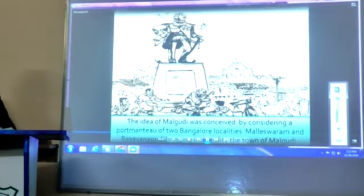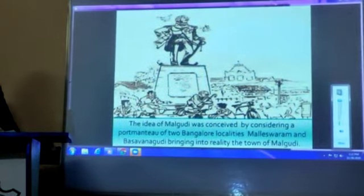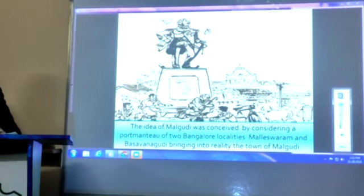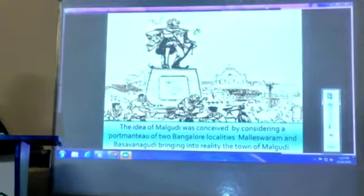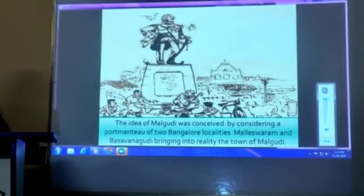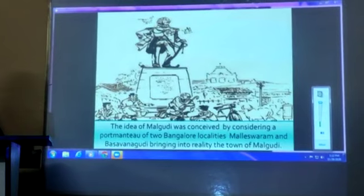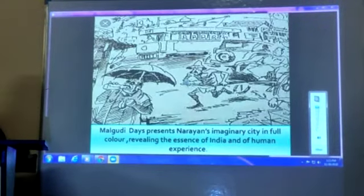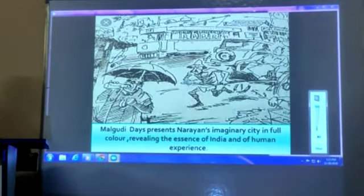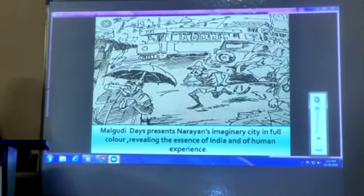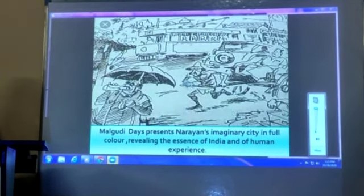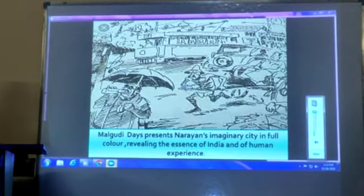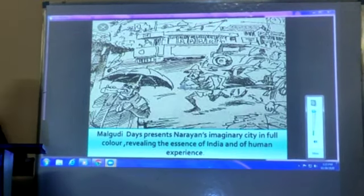The idea of Malgudi was conceived by considering a portmanteau of two Bangalore localities, Malishwar and Basavanagudi, bringing into reality the town of Malgudi. Malgudi Tales presents Narayan's imaginary city in full colour, revealing the essence of India and of human experience.